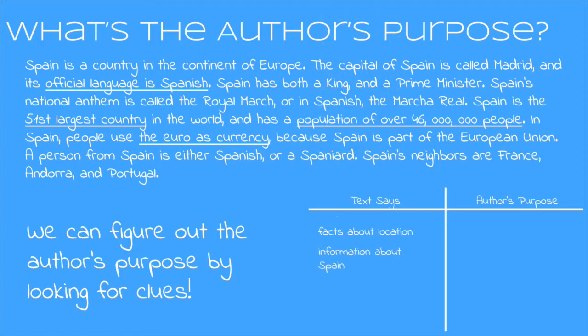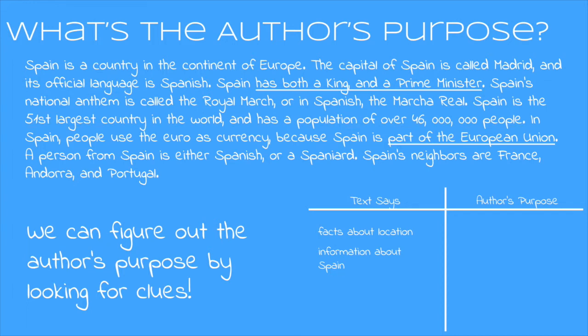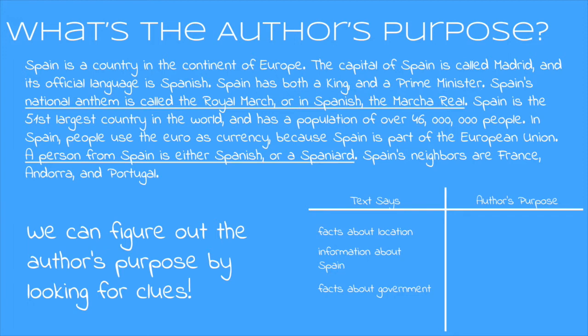Spain has both a king and a prime minister, and Spain is part of the European Union. These both give us details about what Spain's government is like — they give us facts about the government. Let's add that to the graphic organizer. Spain's national anthem is called the Royal March, and a person from Spain is either Spanish or a Spaniard. These details teach us about what the culture is like in Spain, so we'll add that to our graphic organizer too.